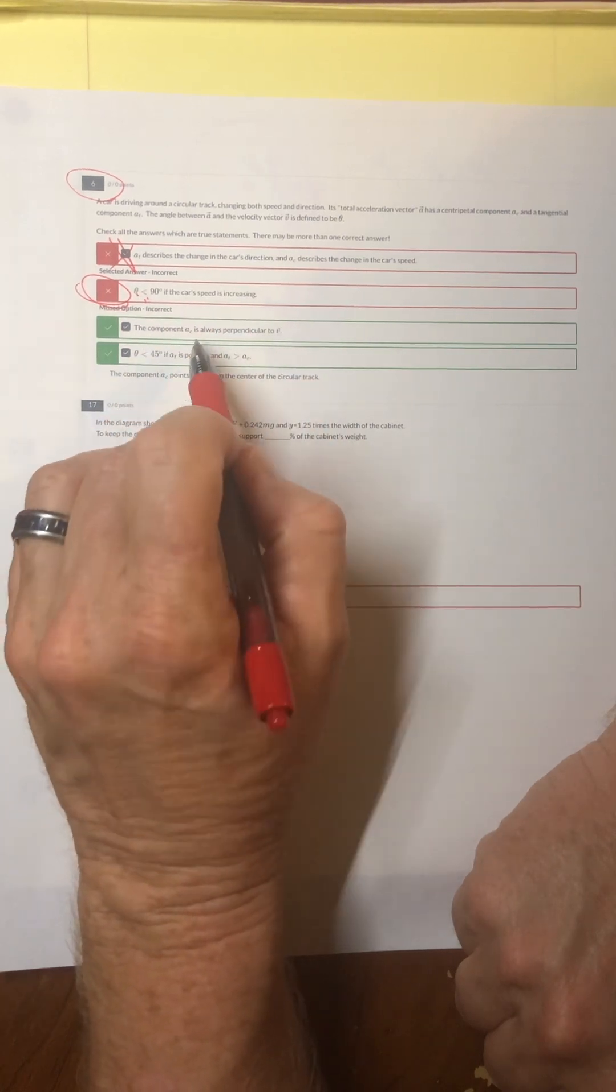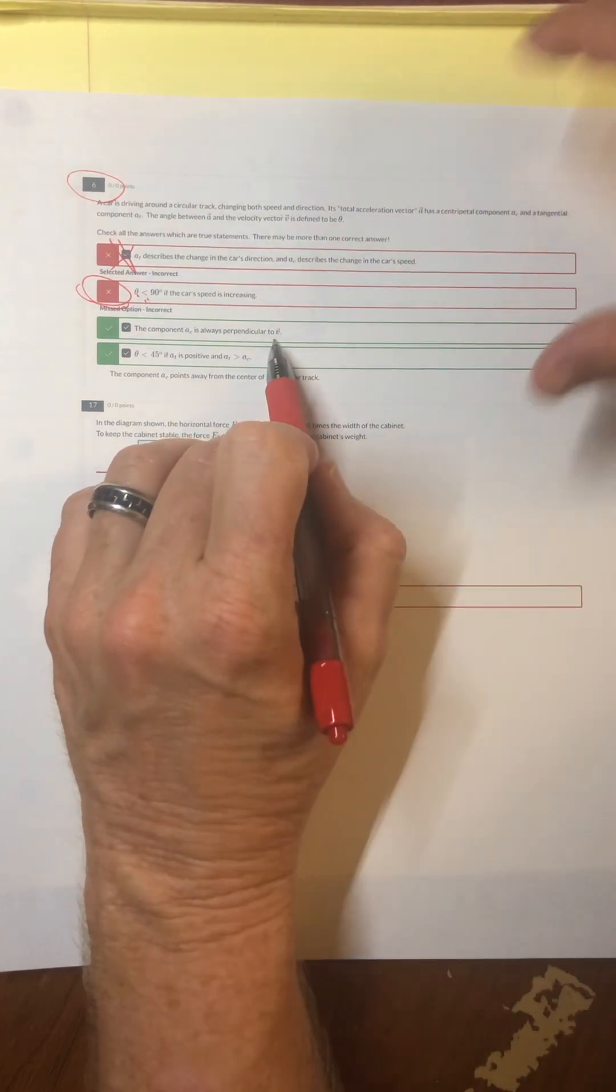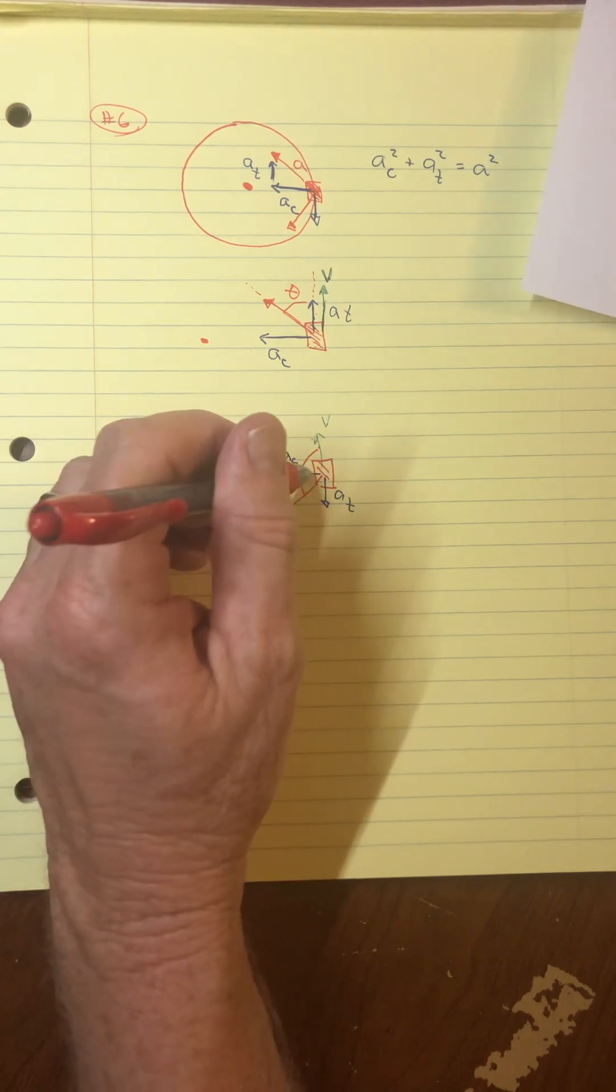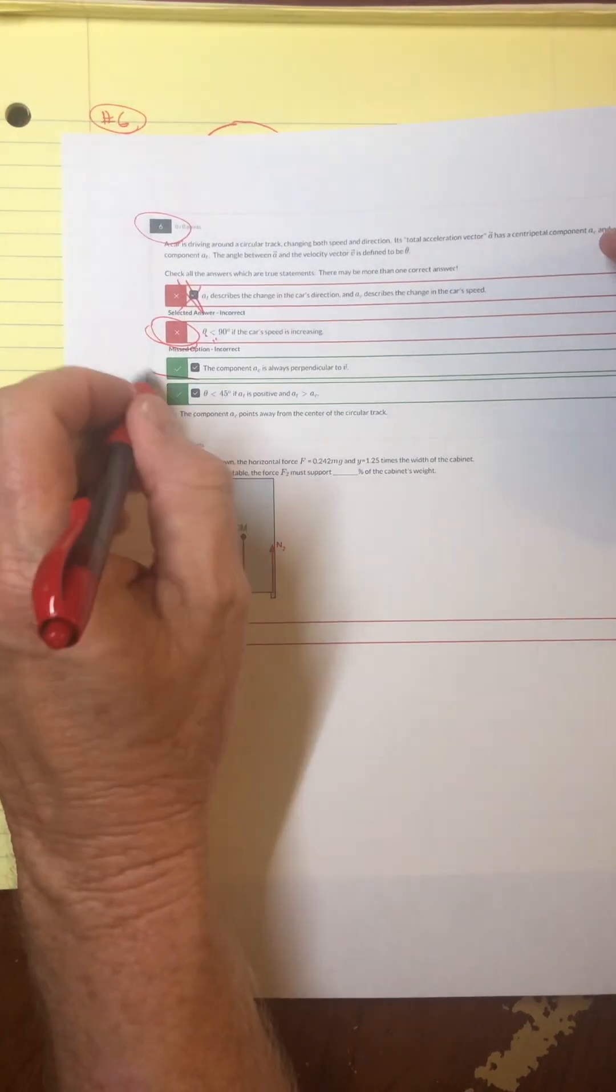The component A centripetal is always perpendicular to the velocity. Oh yeah, so when you are moving, you are moving tangential to the circle, and then your centripetal is towards the center, and those are perpendicular. So that one should be checked.